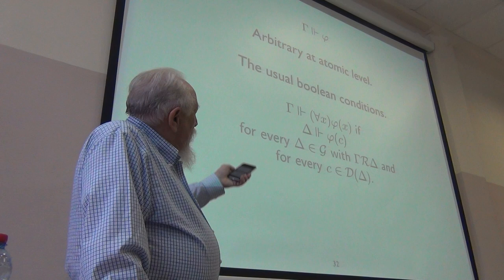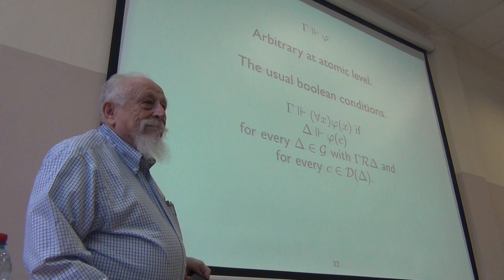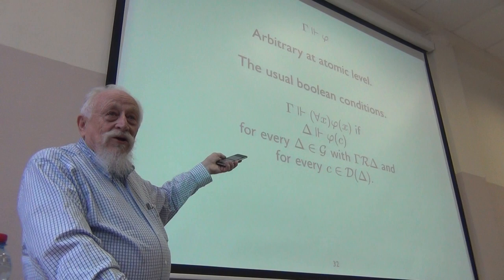For every delta that's accessible from gamma and for everything in the domain of delta, phi of that thing is true at delta. So you've lost a quantifier and instead gained instantiations. But the instantiations are local because different worlds can have different domains.